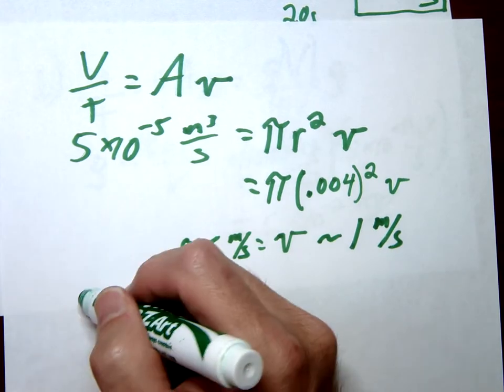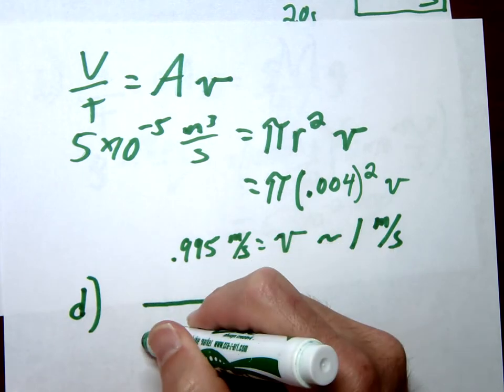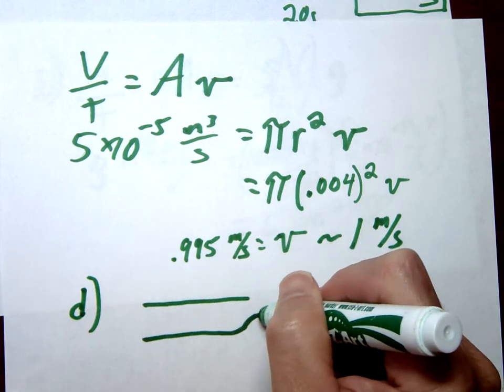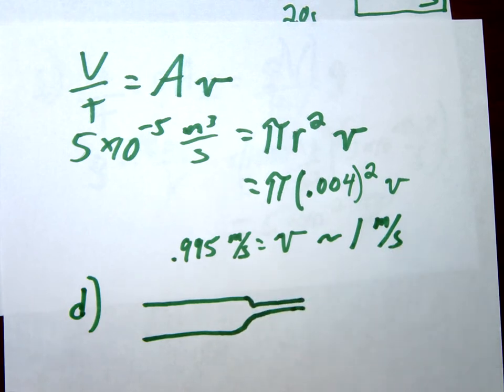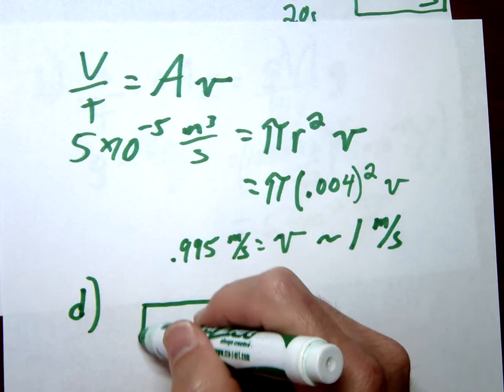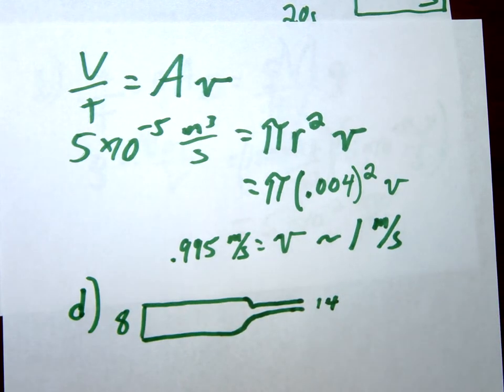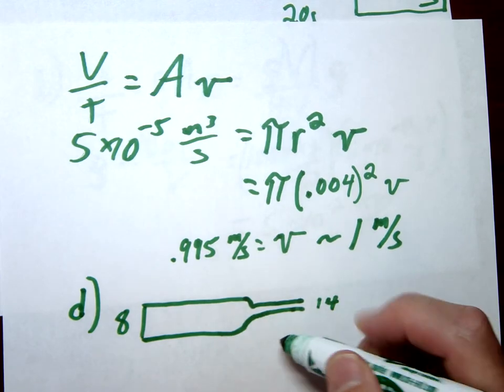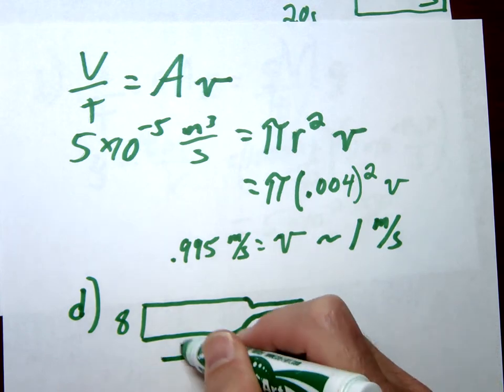Alright, the last and final question is asking what happens if we change our hose? So here's our normal hose right here. We're going to put a nozzle on the end of that hose like this. And so we're going to go from a diameter of 8 millimeters to a diameter of 4 millimeters. So conceptually, what's going to happen is the velocity has to go up. Our velocity has to increase here.